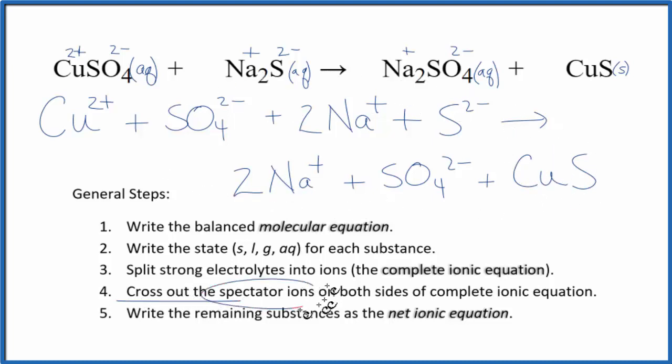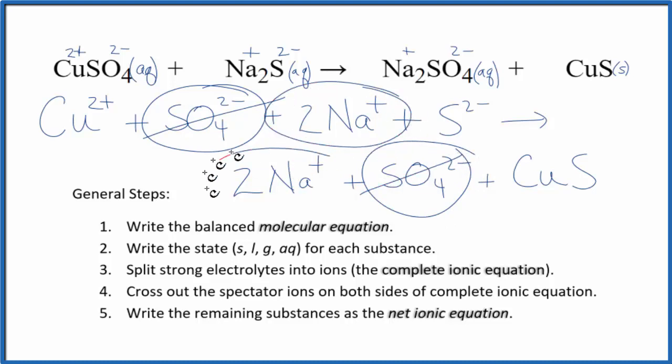Now we can cross out spectator ions. They're on both sides of the complete ionic equation. They haven't changed, so we're not really interested in them. I can see in the reactants there's a sulfate here and again in the products, sulfate. We'll cross that out. 2 sodium ions here and 2 sodium ions here. Cross that out.